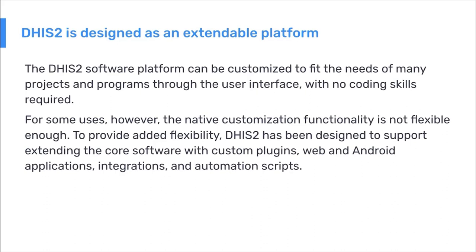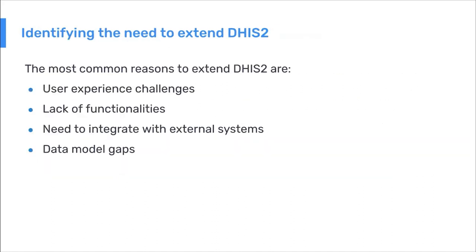To provide added flexibility, DHIS-2 has been designed to support extending the core software with custom plugins, Android and web applications, integrations with external services, and automation scripts. To identify the need to extend DHIS-2, it's important to recognize where the core functionality does not fully address your use case. The most common reasons to extend DHIS-2 include user experience challenges, lack of inherent functionalities, a need to integrate with external systems, and gaps in the native DHIS-2 data model.